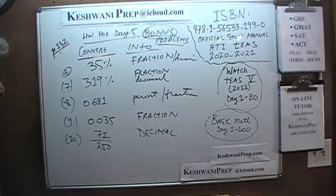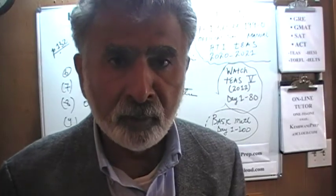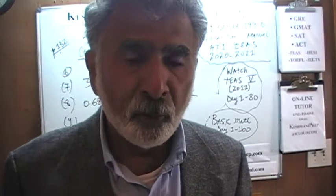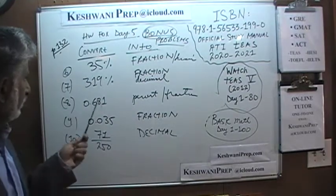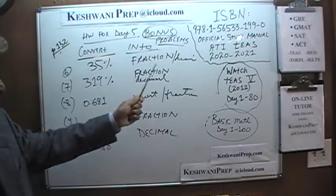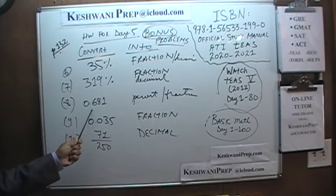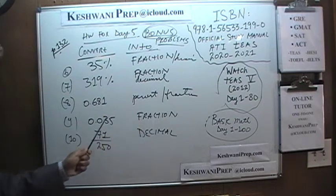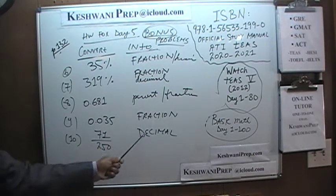Problems six through ten are right here. I asked you to do these problems ahead of time. Hopefully you have done them, but if you have not, I am going to get out of the way right now. I want you to pause the video and do the problems yourself. Here are the five problems: convert 35% into fraction and decimal; convert 319% into fraction and decimal; convert 0.681 into percentage and fraction; convert 0.035 into fraction; and convert 71 over 250 into decimal.